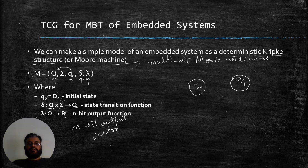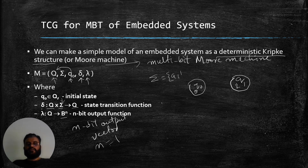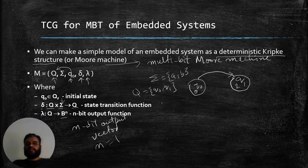To make it deterministic, let's say our sigma set has just two input symbols. We need to give transitions for both a and b for each state — Q contains just q-naught and q1. Randomly drawing transitions: if I read an a from q-naught I go to q1; if I read a b from q-naught I stay on q-naught; if I read an a from q1 I come back to q-naught; and if I read a b from q1 I stay on q1.